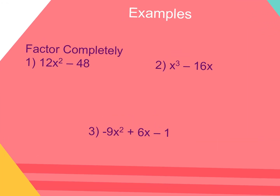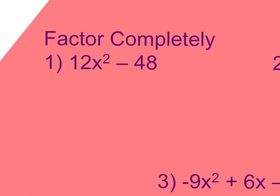For the first example, instructions say factor completely. Always look for a greatest common factor first. The greatest common factor between 12x squared and 48 is going to be 12. So I'm going to divide both terms by 12. I like to show the GCF underneath to give a visual of what I'm dividing. When I divide 12x squared by 12, I'm left with x squared. When I divide negative 48 by 12, I'm left with negative 4.